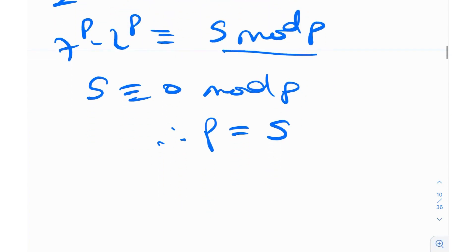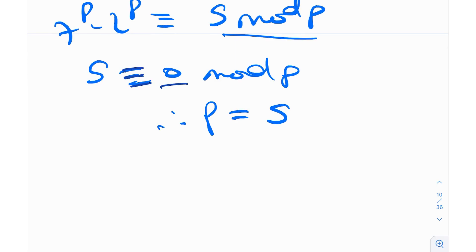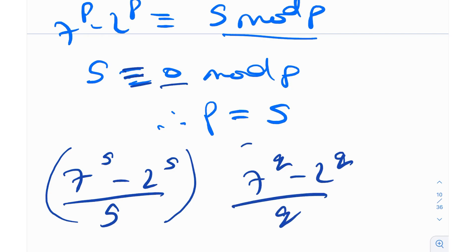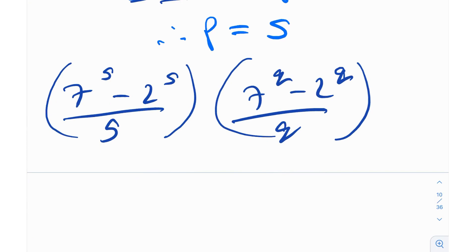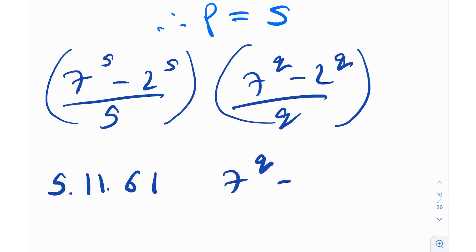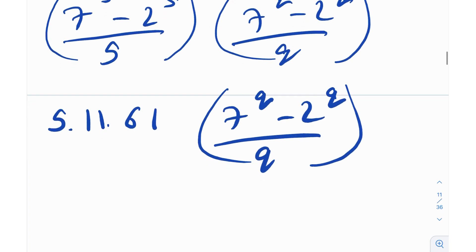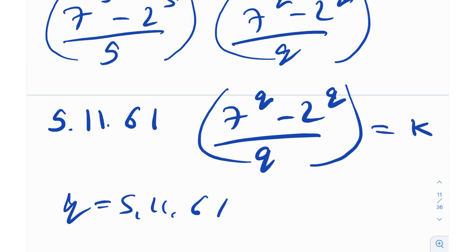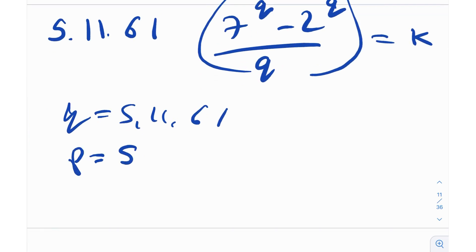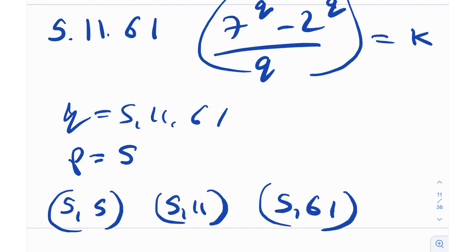The only prime p such that p divides 5 is p = 5 itself. Now we plug p = 5 into the expression: (7^5 − 2^5)/5 × (7^q − 2^q)/q must be an integer. We simplify: 7^5 − 2^5 = 5 × 11 × 61, so the expression becomes 5 × 11 × 61 × (7^q − 2^q)/q. Since q is prime, q can easily be 5, 11, or 61, giving solutions (p, q) = (5, 5), (5, 11), (5, 61).